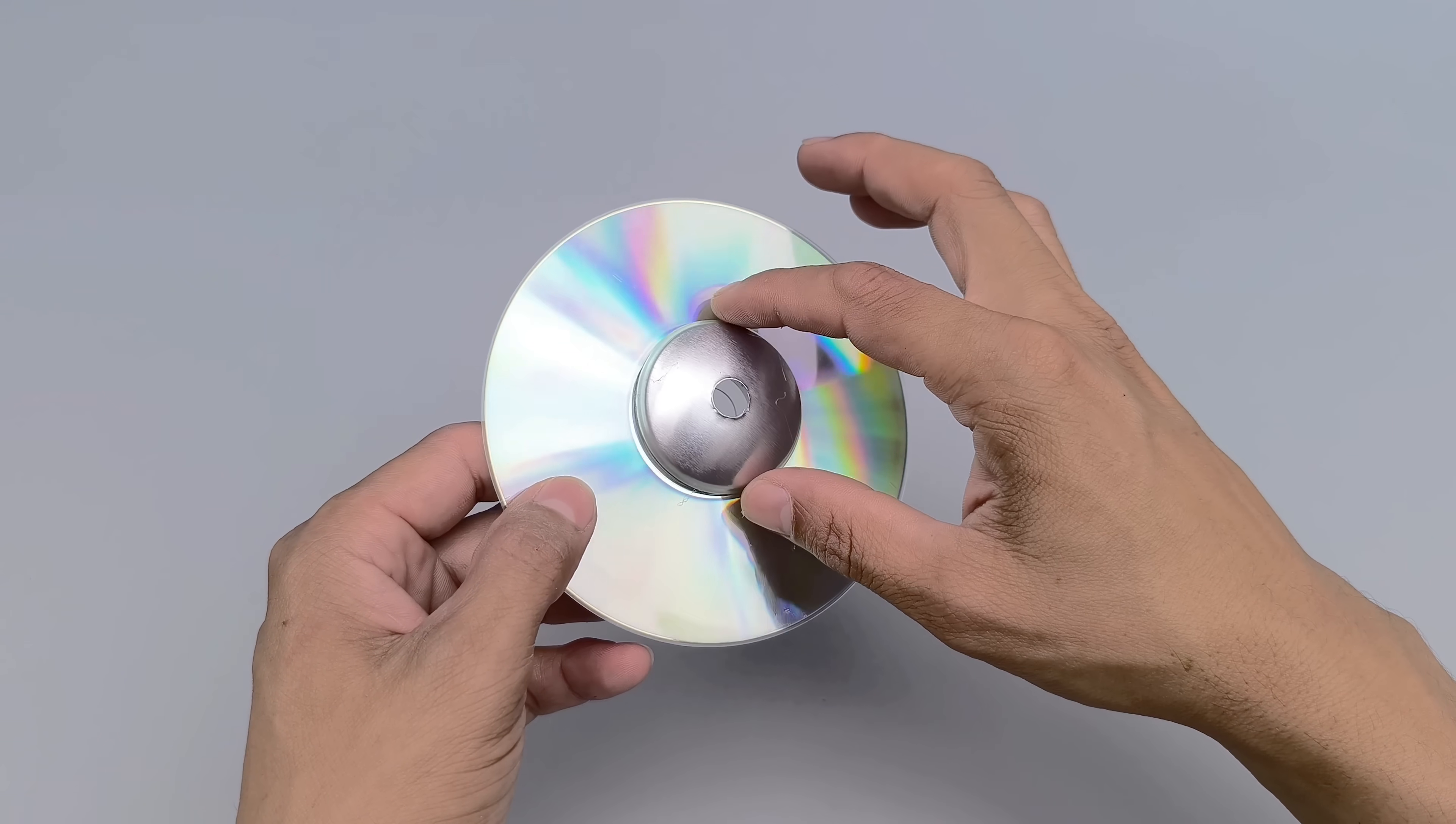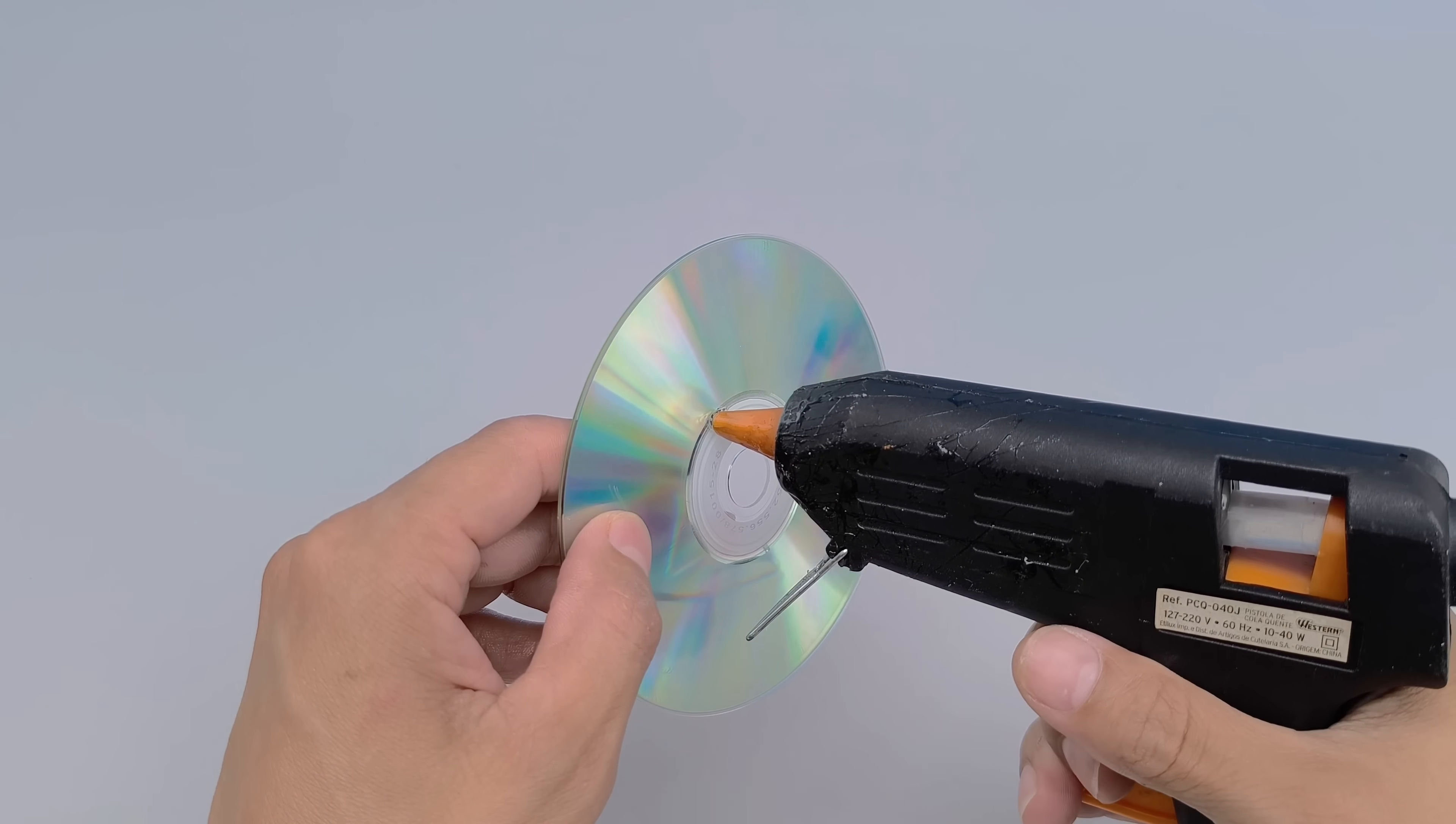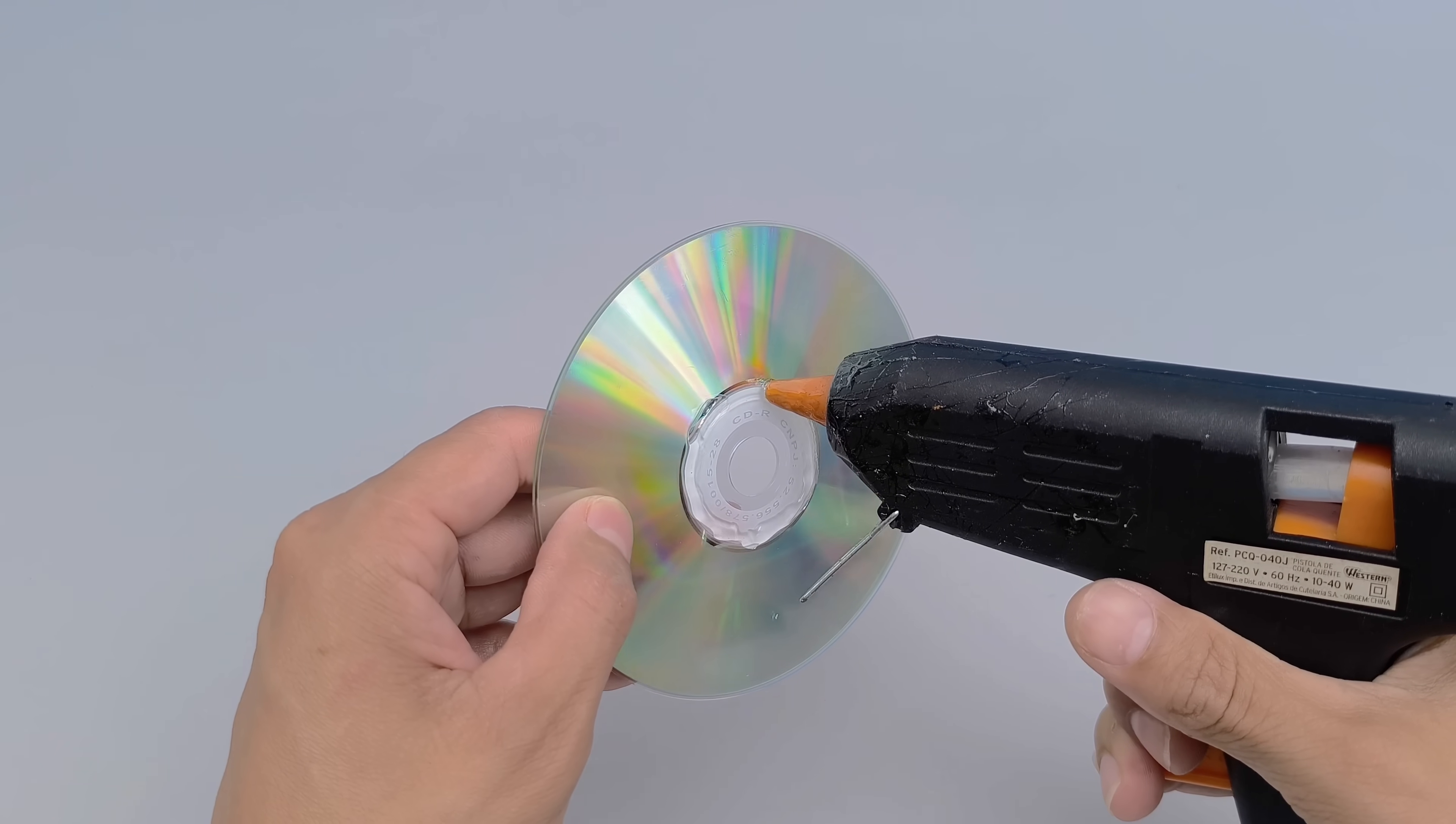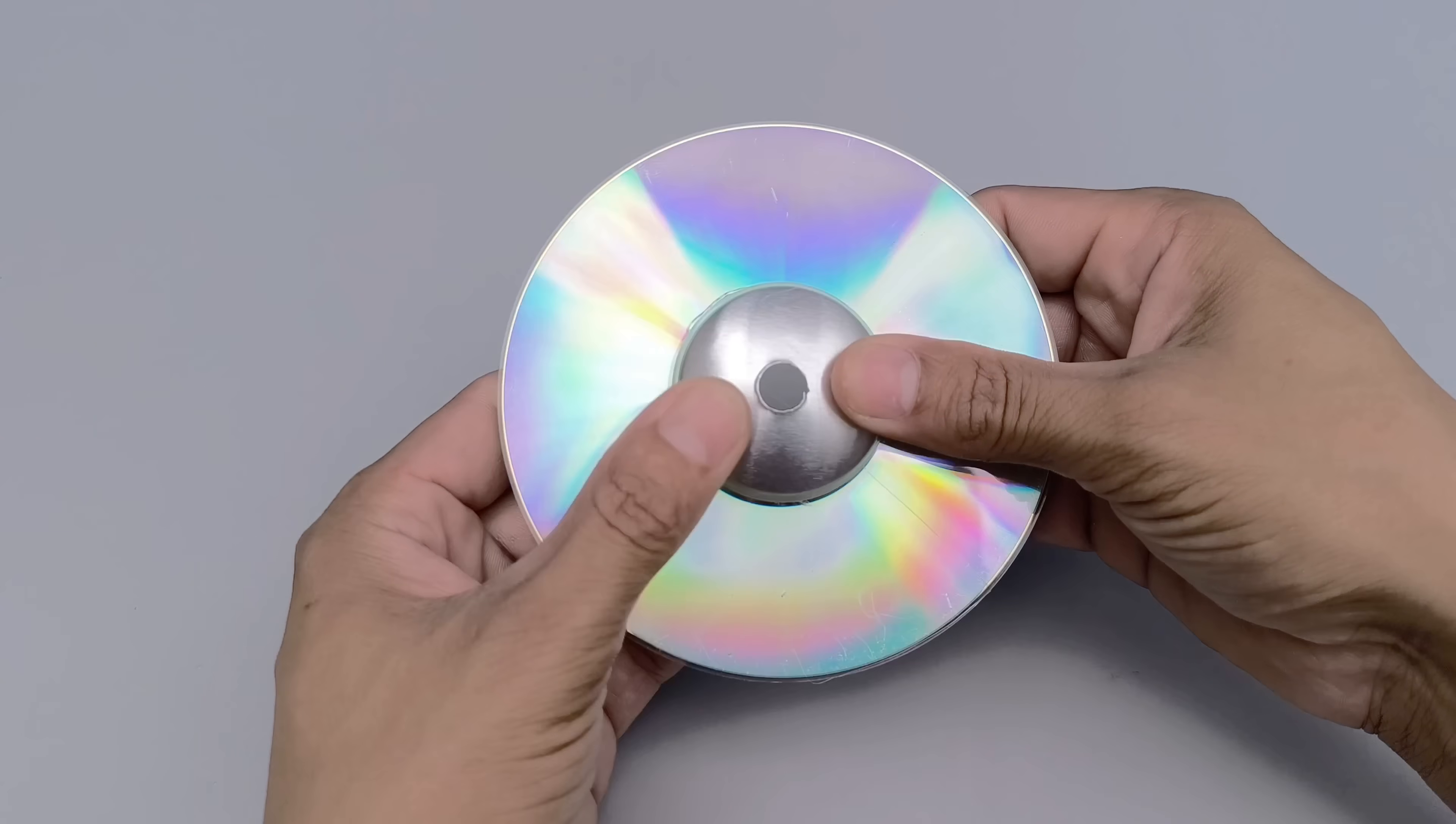The next step is to join the bottom of the can to the center of the CD-ROM, using hot glue to ensure a firm hold. Here, the aluminum of the can not only serves as a physical support, but also as a fundamental part of the circuit, helping to direct and enhance the flow of energy between the components.